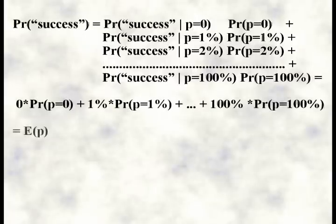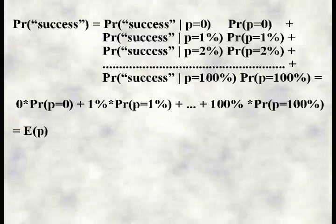But this is precisely the same as the expectancy of p under the prior probability distribution. We can get an expectancy by weighting each possibility with its probability and sum it up. So the probability of success is the expectancy of p. If we had data, we would get the same kind of result. The probability of success given the data is the expectancy of p given the data.